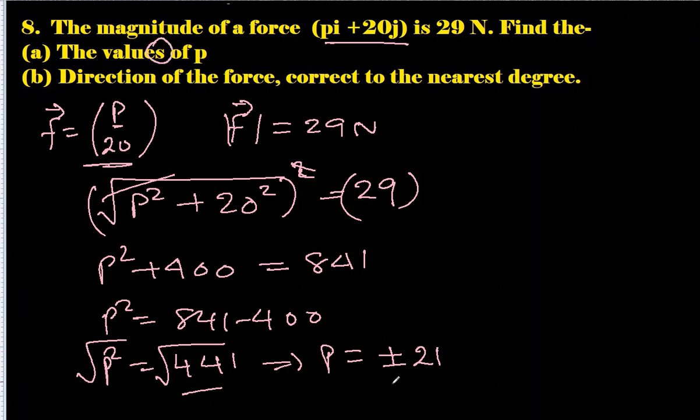p² = 441. Square root both sides, so this gives us p = square root of 441, which will be plus and minus 21. That's why they have used the word values, not value. So we have two values of p which are plus and minus 21.